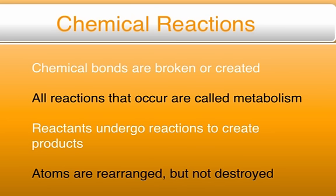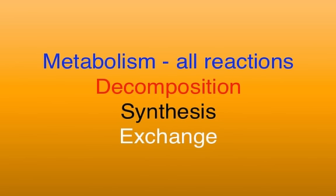In chemical reactions, new bonds are formed or existing bonds are broken between atoms or molecules. All of the reactions that occur in the body are part of metabolism. In a chemical reaction, the participants at the start are called reactants, and the reaction generates one or more products. Chemical reactions neither create nor destroy atoms — they merely rearrange atoms into new combinations. Metabolism is the name given to all of the reactions that occur during chemical processes.